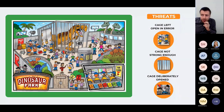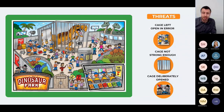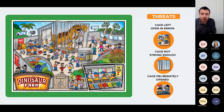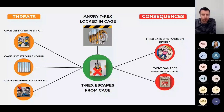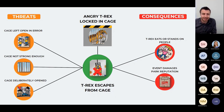The threats chosen here are: the cage might be left open in error, the cage might not be strong enough, or the cage might be deliberately opened by some of those suspicious characters. The top and bottom threats both result in the cage door being open, but the reasons are very different and may well have different barriers. Here we have our risk assessment shown in the traditional bowtie format — threats on the left may trigger the top event, and consequences on the right are the undesirable outcomes. This is a bowtie diagram in its simplest form.